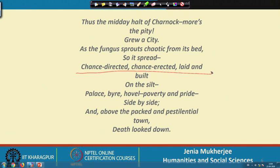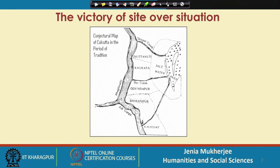As Kipling mentions, he talks about poverty, pestilence, death, and all that — and this is quite true in the sense that if we consult colonial reports, for example the reports by Wilson, by Colebrook, and by Hamilton, they describe this particular space as extremely unhealthy because it was a malarial atmosphere and the British were dying.